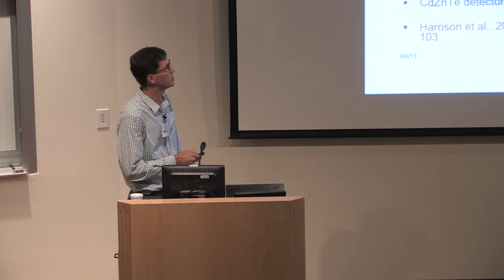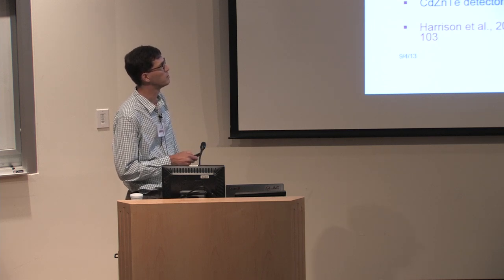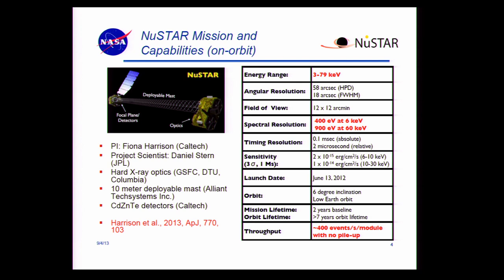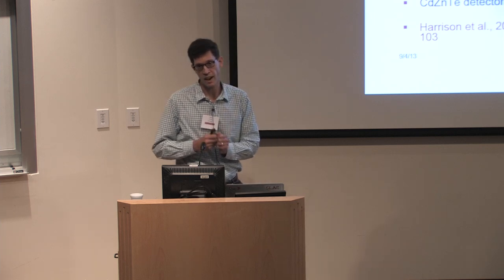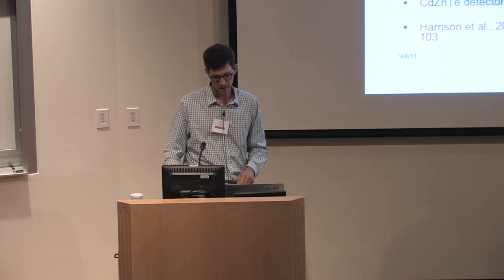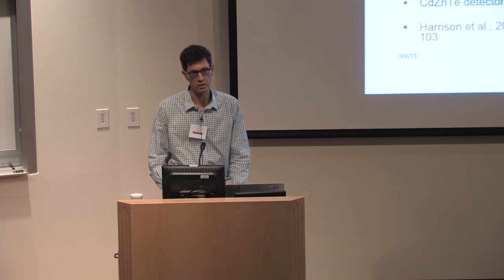The spectral resolution above 10 keV is unprecedented — 900 eV at 60 keV is really a step forward. These are full-width half-max numbers. Another thing that doesn't usually show up on the list of properties, but is very important for our science, is the throughput. We can get 400 events per second per module with no pileup. CCDs require all kinds of workarounds to avoid pileup and usually result in very low efficiencies. We observe with high efficiency, high count rate, and no serious systematic issues with our response matrix.